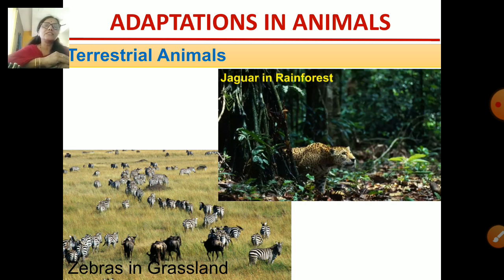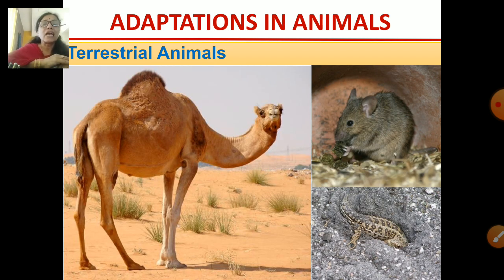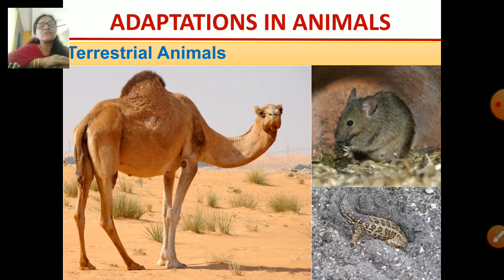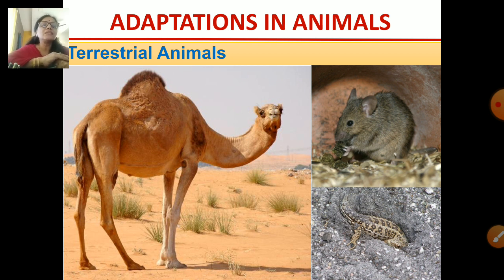Here are pictures of different terrestrial animals. You can see a jaguar in a rainforest, zebras in grassland, and a camel which lives in the desert. The camel has got long legs — as you know, there is sand everywhere in the desert and very little water, so the long legs help it to walk in the sand. Some other desert animals are rats and lizards.